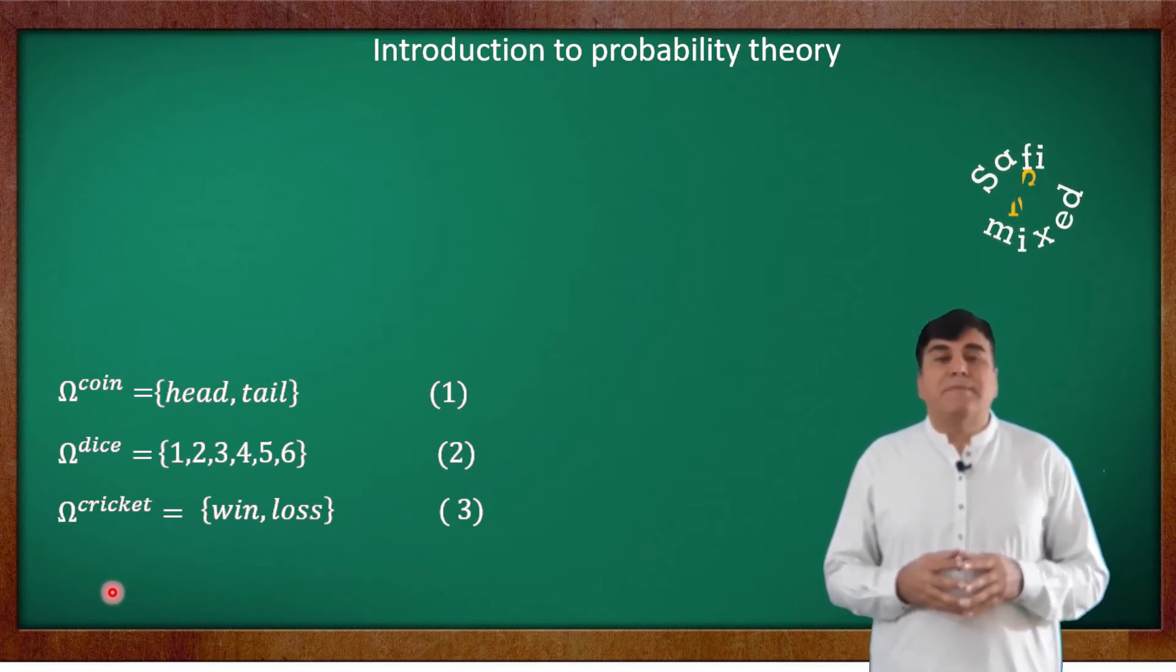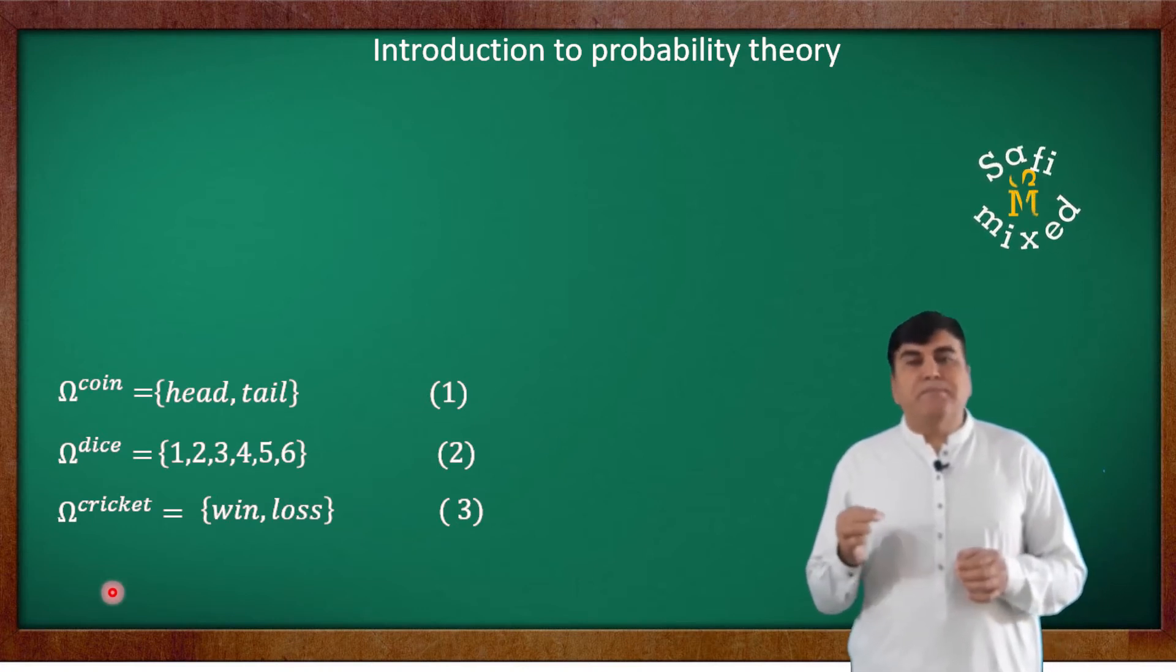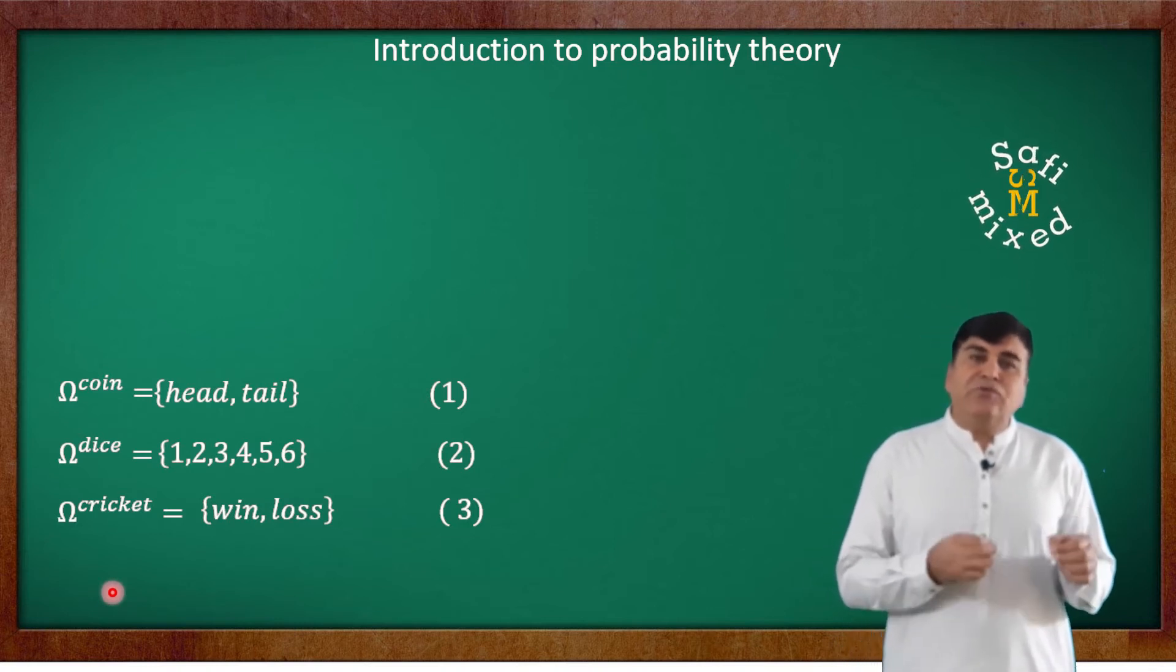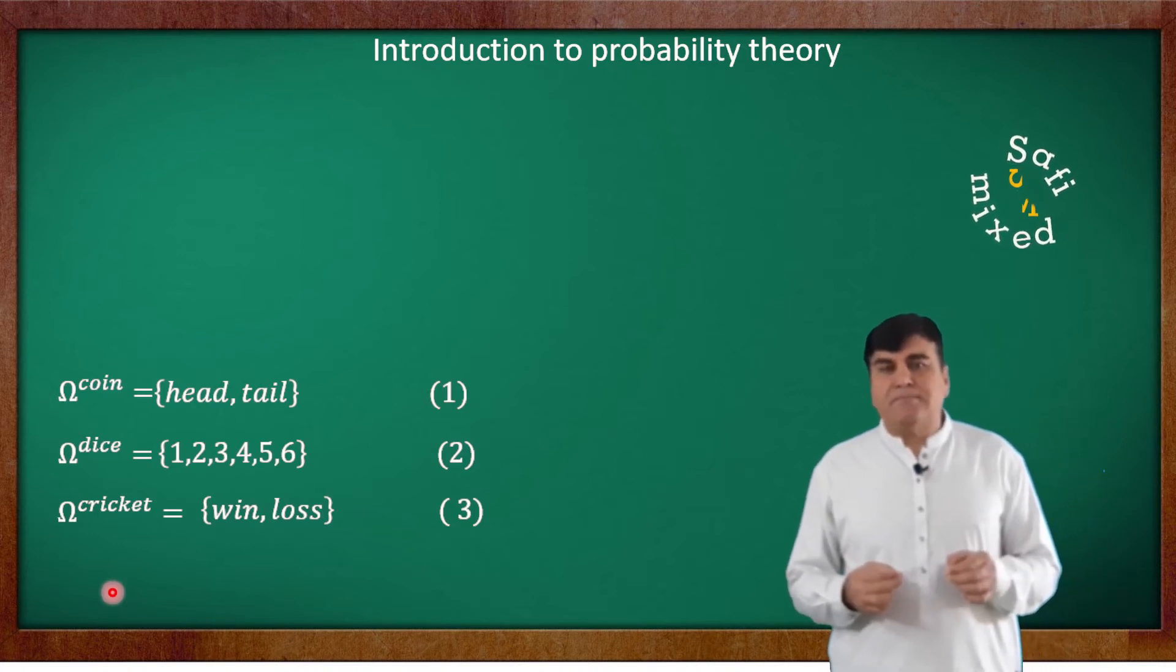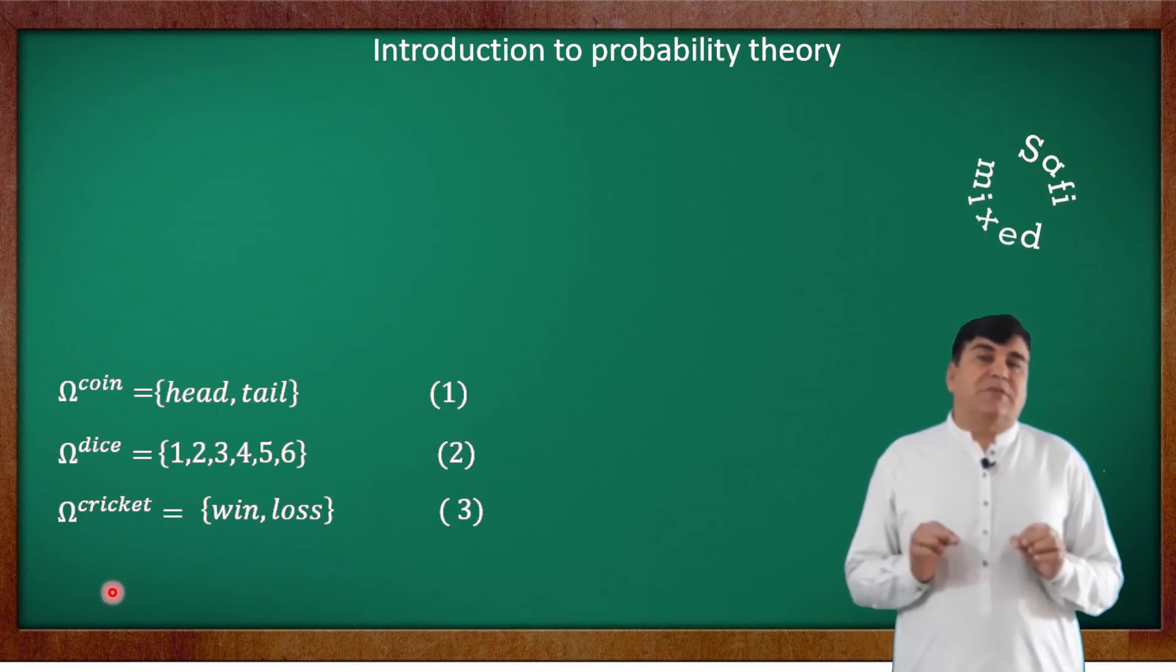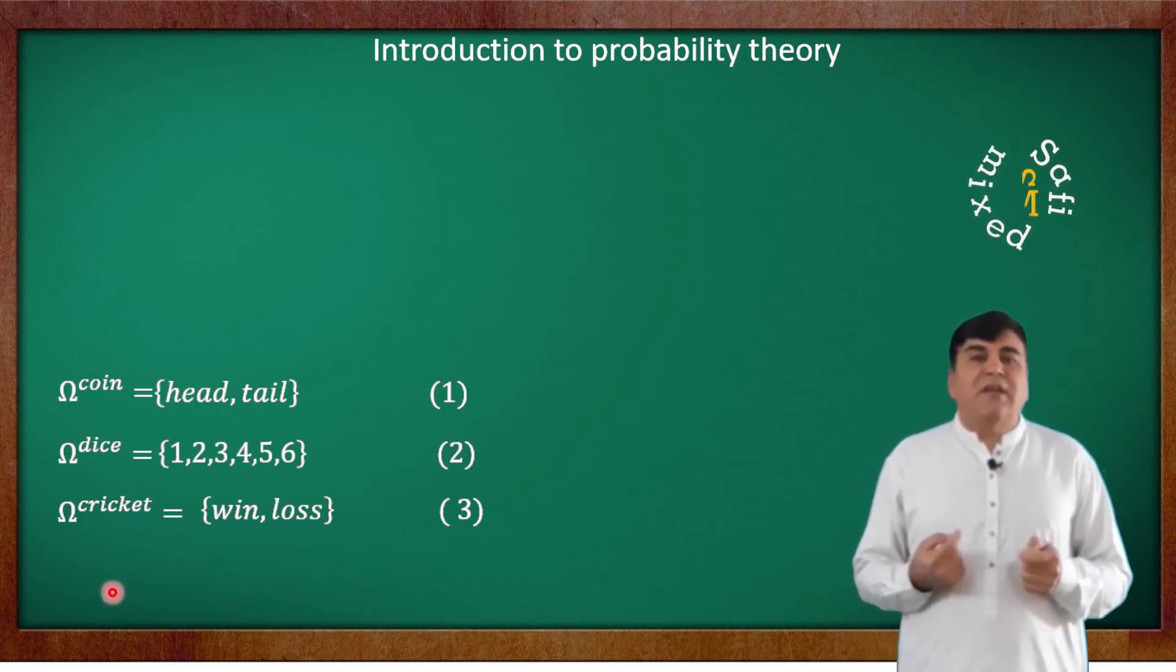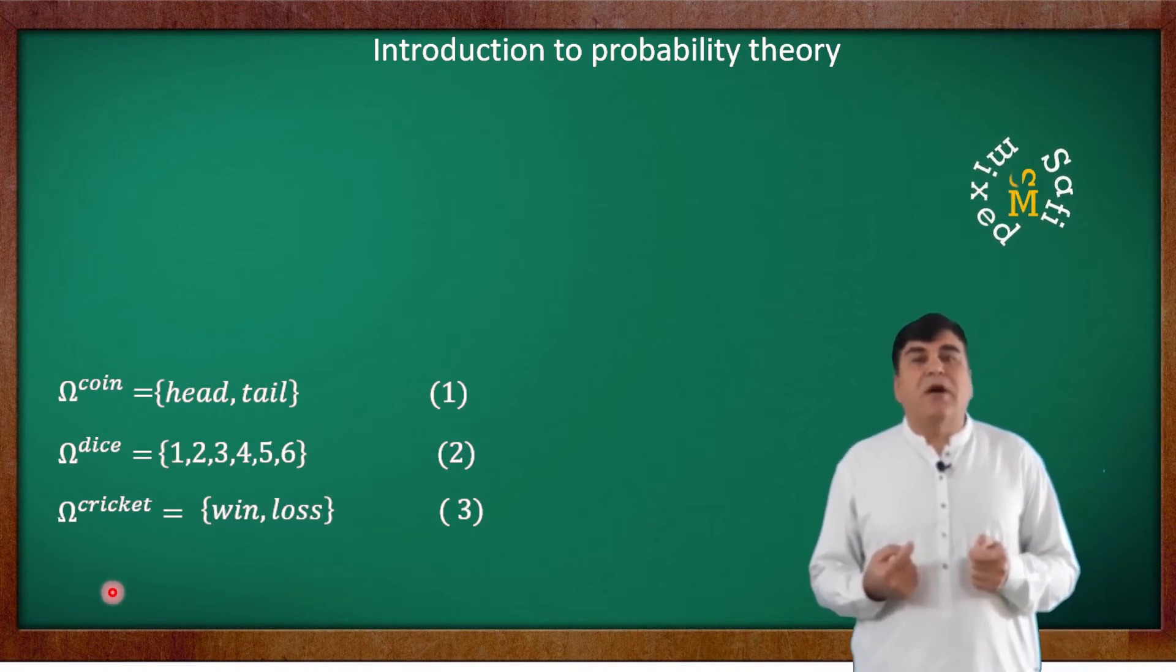Similarly, in a cricket match, a spin-causing pitch is biased in the probability the same way. The probability is a quantization in the form of a number of each expected outcome of an event.